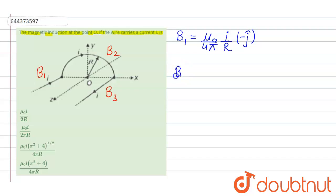And the magnetic field due to semi-circle that is B2 will be equal to mu naught upon 4 pi, pi i by r and its direction will be minus k cap.